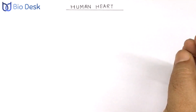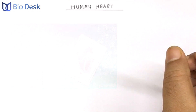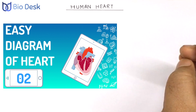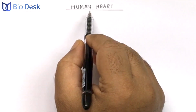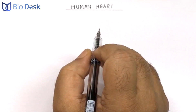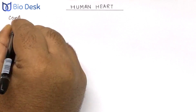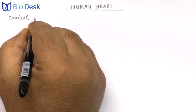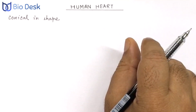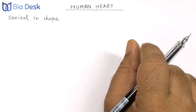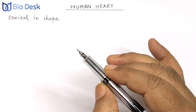Today we shall learn how to draw the diagram of the heart showing external features. We have discussed the structure and function of the human heart in detail in our previous video. The human heart is a four-chambered organ and it is conical in shape. The upper part of the heart is broader and the lower part is narrow, so before starting the diagram, keep the shape of the heart in mind.